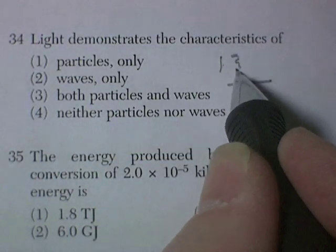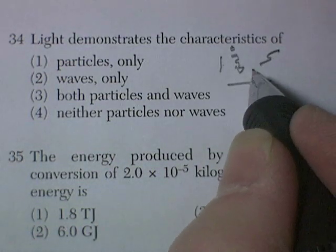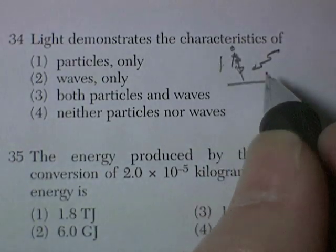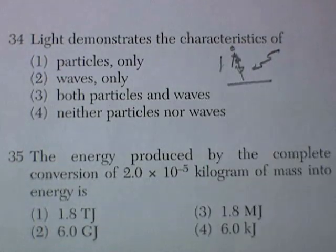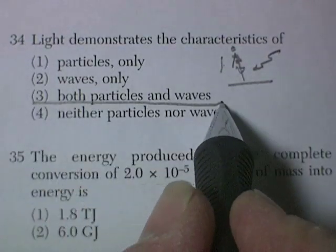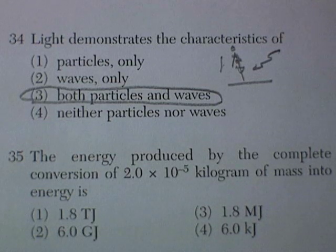However, the photoelectric effect says that when electrons are given off, when light hits an object. So light hits an object and can eject electrons. And that's a characteristic of a particle. So the correct answer for light is it's both a wave and a particle. It's the particle-wave duality would be the vocabulary.